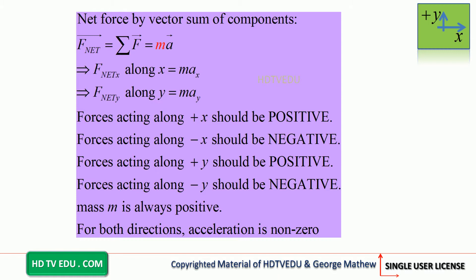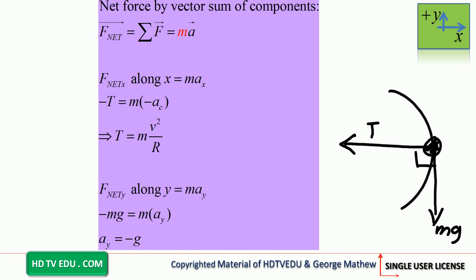Net force by vector sum of components: net force equals mass times acceleration. Net force along x equals mass times acceleration along x. Net force along y equals mass times acceleration along y. Forces acting along positive x are positive; along negative x are negative; along positive y are positive; along negative y are negative. The angle between the direction of tension and gravitational force is 90 degrees. Tension does not have a vertical component. Gravitational force does not have a horizontal component.